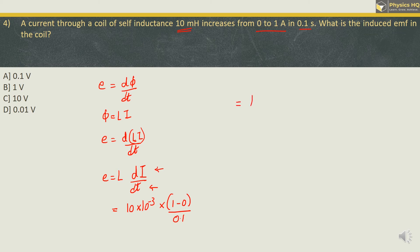So we can write this as 10^-2 into 1 divided by 0.1, take this above what we have is 10^-2 into 10 which gives us 10^-1 which is 0.1V. So the correct option is option A. Let us go ahead to the next MCQ.